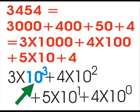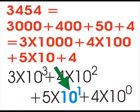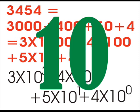Here 3, 4, 5 and 4 are digits of decimal system. 10 to the power 3, 10 to the power 2, 10 to the power 1 and 10 to the power 0 are multiplier of the respective digits and 10 is known as base of the decimal system.